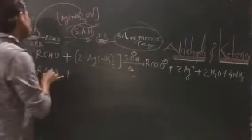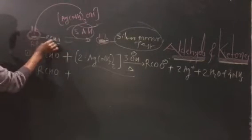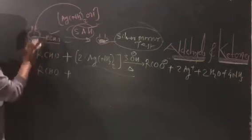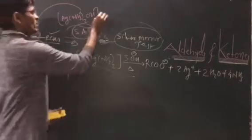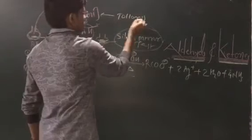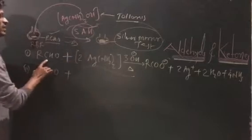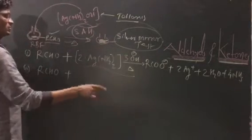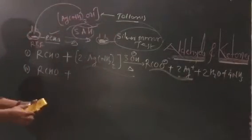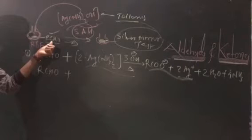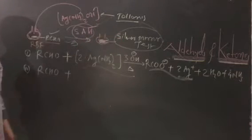This color change gives the silver mirror test. The addition of freshly prepared silver ammonium hydroxide to aldehyde results in the formation of the silver mirror test. This is called Tollens' reagent. Whenever aldehyde is reacted with silver ammonium hydroxide, the silver mirror test is positive. But when you take a ketone, it does not give the silver mirror test.